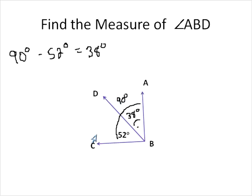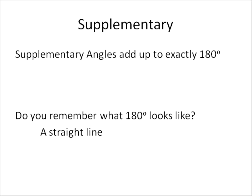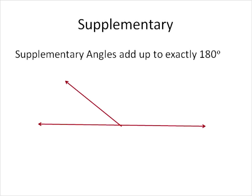Alright, again, complementary angles, they add up to 90 degrees. The next type of angle we're going to talk about is a supplementary angle. And oftentimes complementary and supplementary get mixed up. But supplementary angles add up to exactly 180 degrees. Do you remember what 180 degrees looks like? Yeah, it's a straight line. So supplementary angles will add up to give you exactly 180 degrees or exactly a straight line. So this angle here plus this angle here gives us the full angle of 180 degrees.